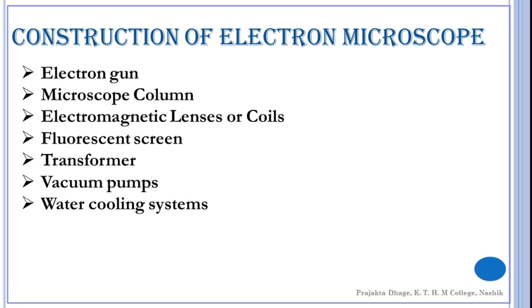Next one is the fluorescent screen. As electrons are harmful to our eyes, the magnified image is observed on a fluorescent screen. The screen is coated with a chemical which by its excitation forms the image as on the television screen.